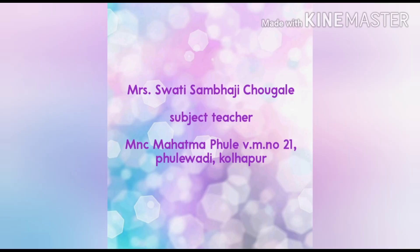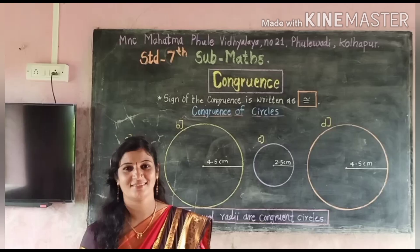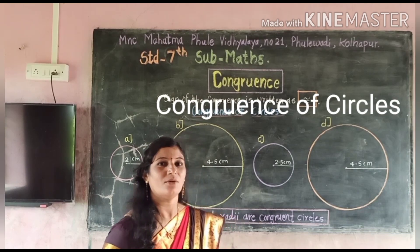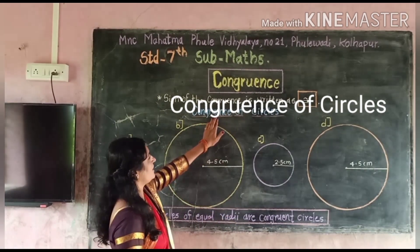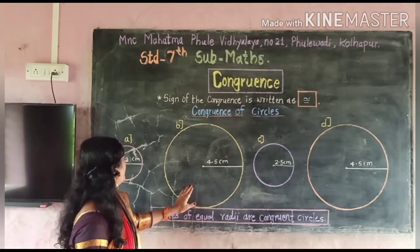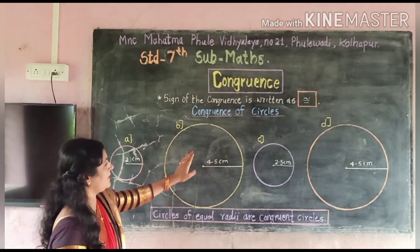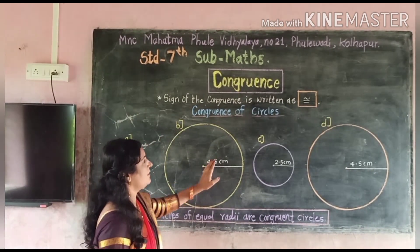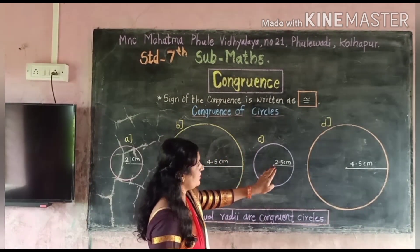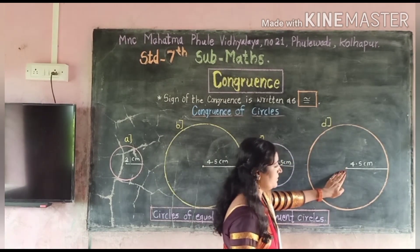Thank you so much for joining us. Now at last we see the topic of congruent circles. Observe these given figures: Circle A with radius 2 cm, Circle B with radius 4.5 cm, Circle C with radius 2.5 cm, and Circle D with radius 4.5 cm.